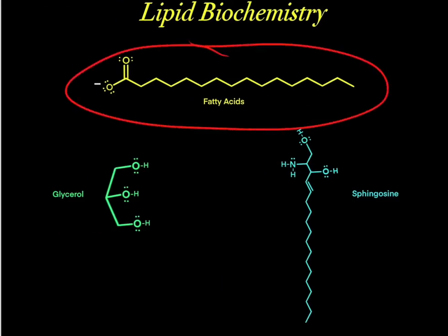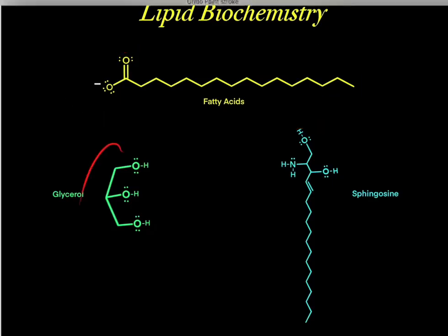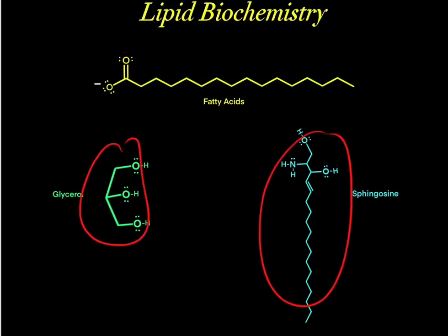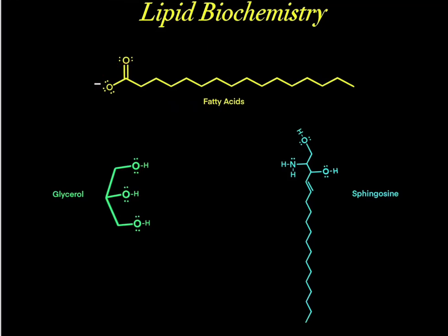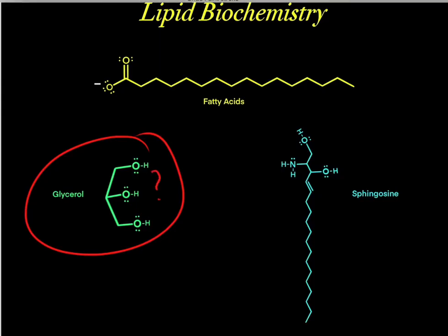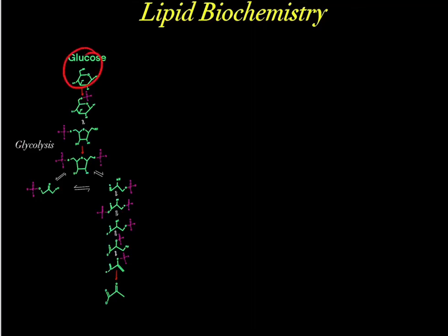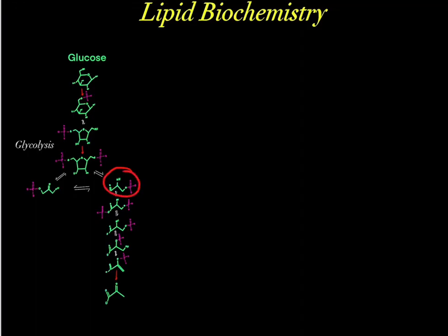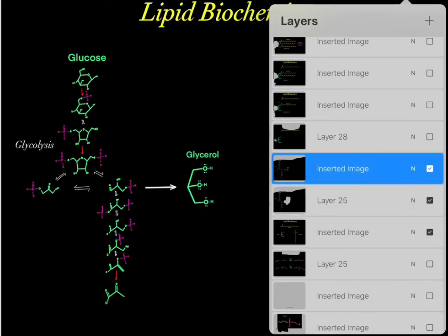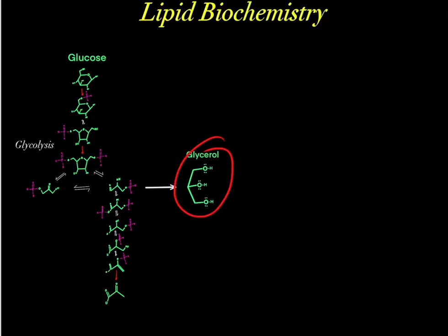These fatty acids are at the center of lipid biochemistry, and there are two types of backbones that we can attach these fatty acids to. The first type is the glycerol backbone. You've probably heard of glycolysis, where we take glucose molecules and enter them through that pathway. Sometimes we can take a particular intermediate of glycolysis and use it to form glycerol — this glycerol backbone.